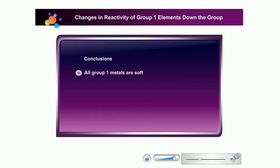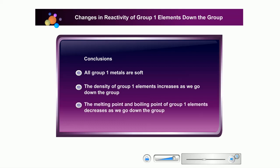Conclusion: All group 1 metals are soft. The density of group 1 elements increases as we go down the group. The melting point and boiling point of group 1 elements decreases as we go down the group.